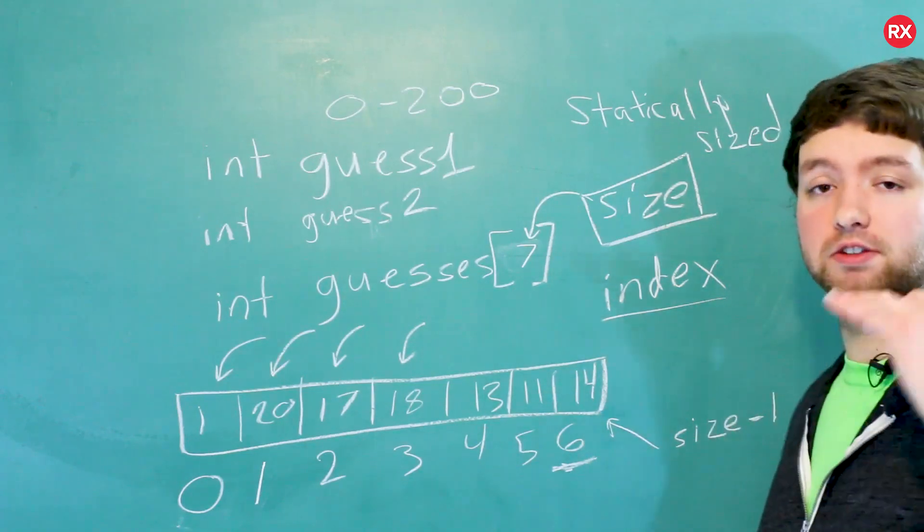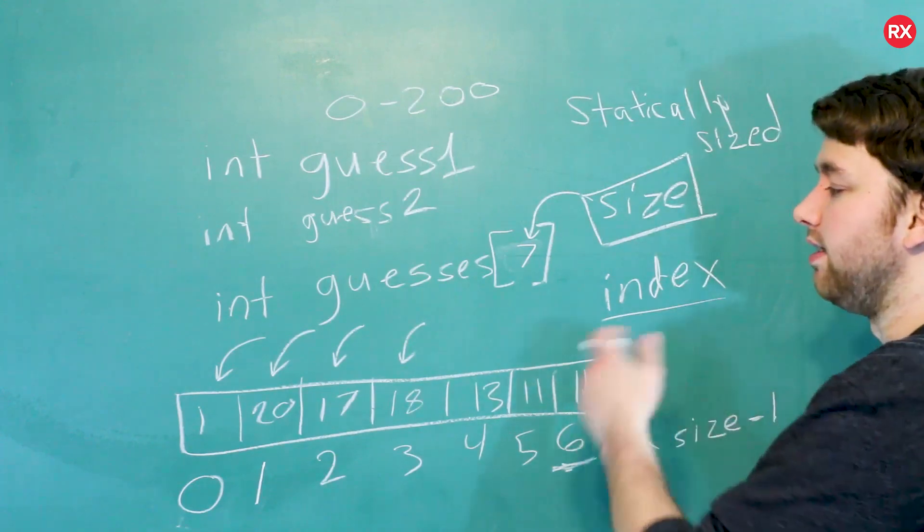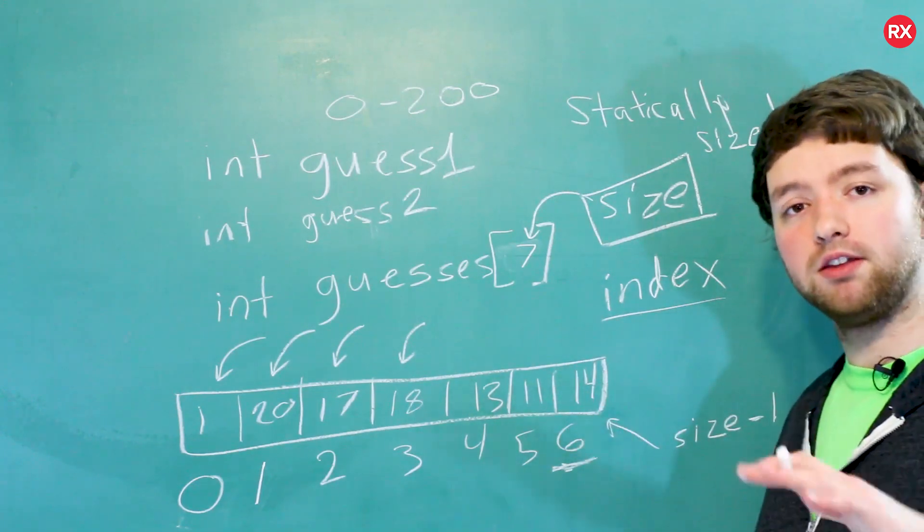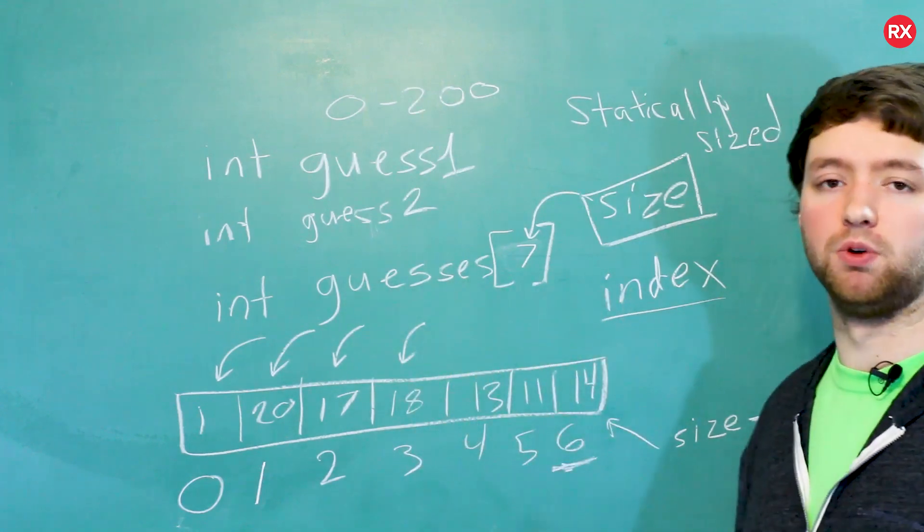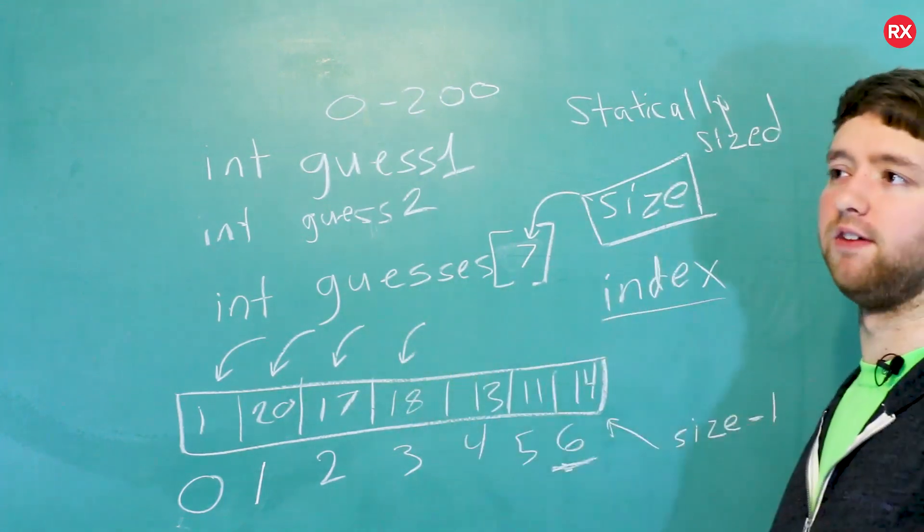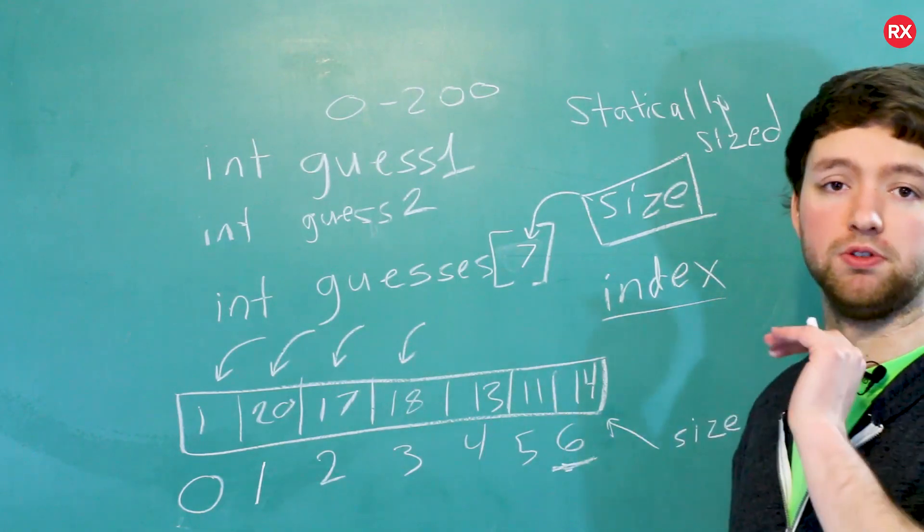Now, there are some ways around this. If you do want to make like a dynamic array, that is where vectors come in. You could also use dynamic memory if you want to make things real complicated. But that's a thing of C. You don't need to do that. You can just use vectors.